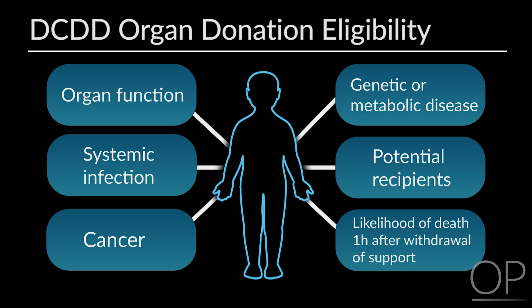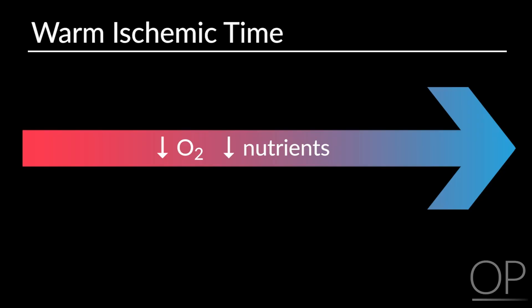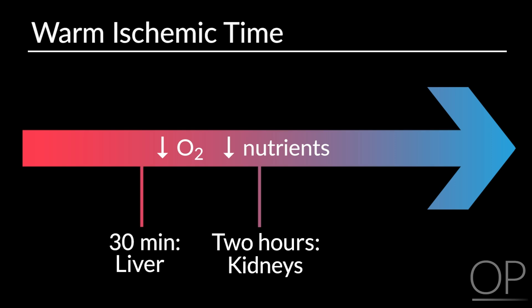The NEOB will consult the ICU team about this likelihood. You may be wondering why the patient has to progress to pulselessness within two hours. The period of time after the ventilator and any cardiac support is stopped is a period of diminishing delivery of oxygen and nutrients to the organs that will be transplanted — we call this warm ischemic time. Generally speaking, the shorter the warm ischemic time, the healthier the transplanted organ will be. Up to two hours, or 120 minutes, is acceptable for the kidneys, and up to 30 minutes is acceptable for the liver.